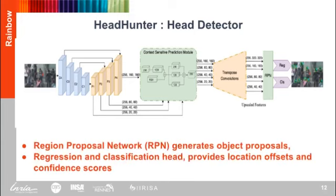Finally, we use a Faster RCNN head with a Region Proposal Network generating object proposals, while the regression and classification heads provide location offsets and confidence scores respectively. With this simple assembly of three main components, our head detector achieves state-of-the-art results on the SCUT Head dataset.